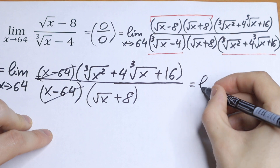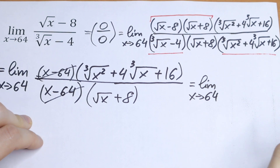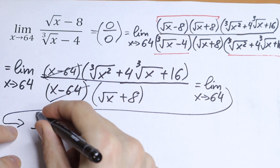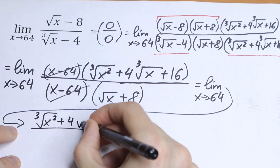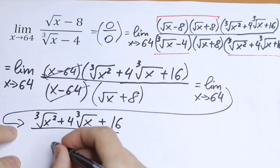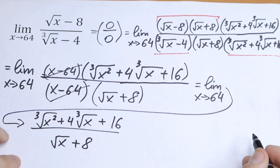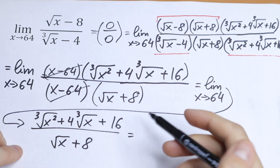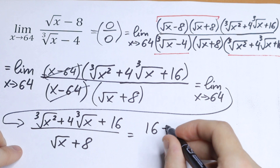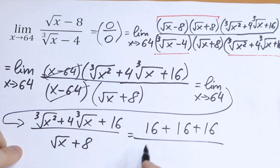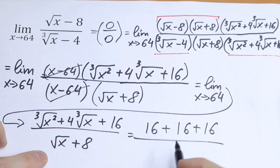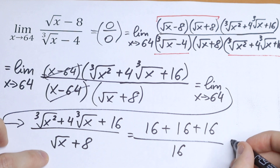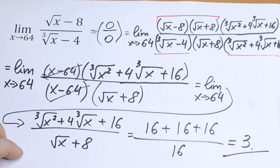After canceling, we have the limit as x approaches 64 of: cube root of x squared plus 4 times cube root of x plus 16, all over square root of x plus 8. Substituting x = 64: the numerator gives 16 plus 16 plus 16 equals 48, and the denominator gives square root of 64 plus 8, which is 8 plus 8 equals 16. So 48 over 16 equals 3. This is our answer.